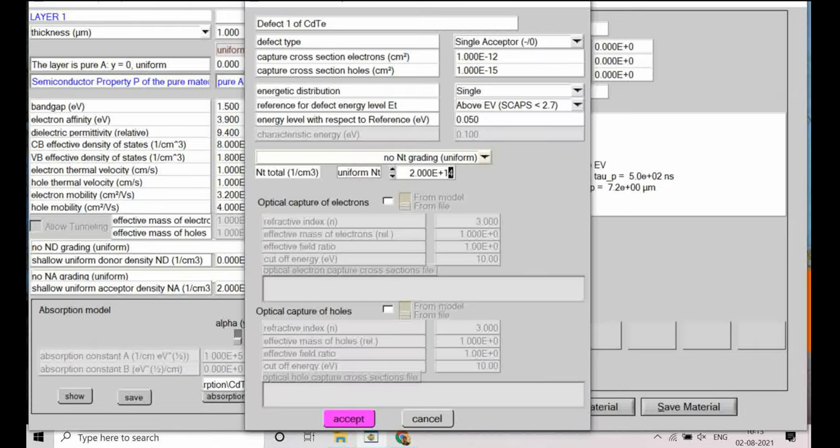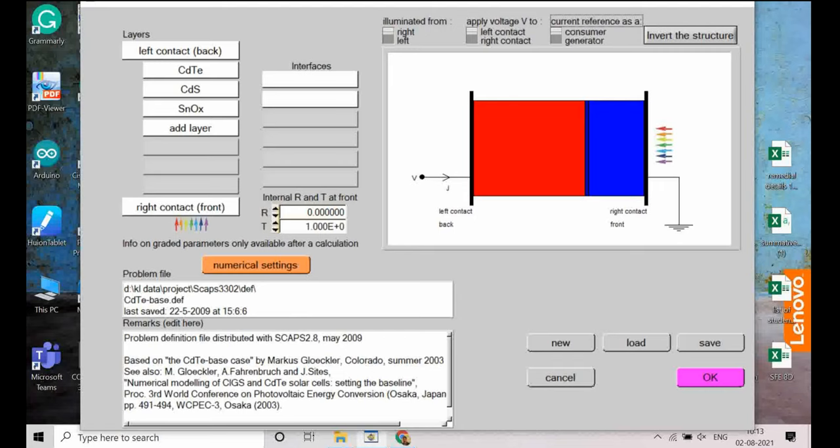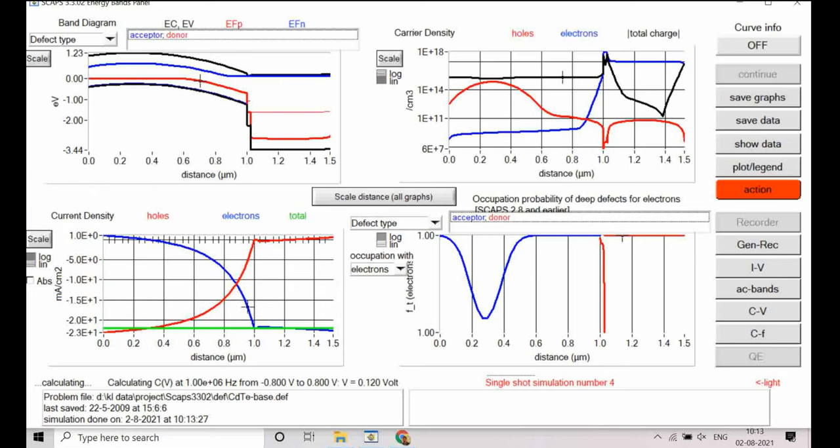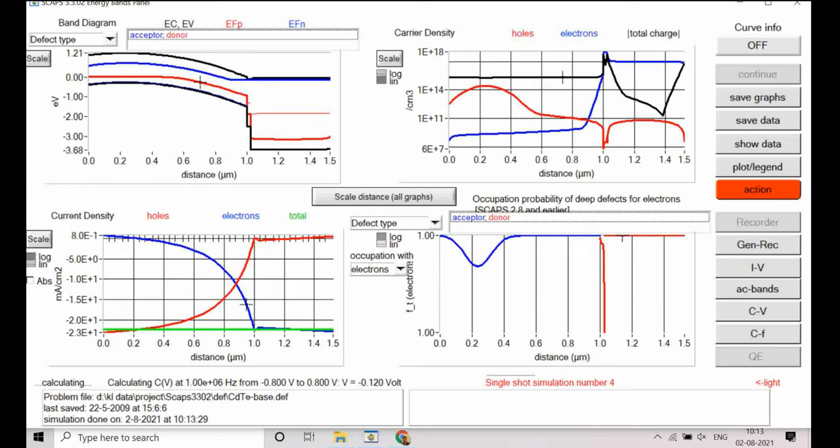So if I just show you CDT. What I will do, I will just increase the defect density here, 2 to 15. I am taking defect density. And then I am simulating it. Let me simulate. So I will take 5. So now if we simulate it, let's see what happens. If there is any variation in our CF plot.